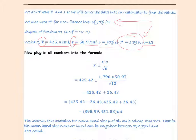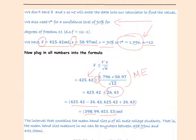Now that we have all the numbers, we plug them into the formula and find the margin of error — the number we add and subtract to the sample mean. The margin of error is 26.43. Subtracting and adding the margin of error gives us the range of values that estimate the mean. The conclusion is that the mean hand size of all male college students lies between 398.99 milliliters and 451.53 milliliters.